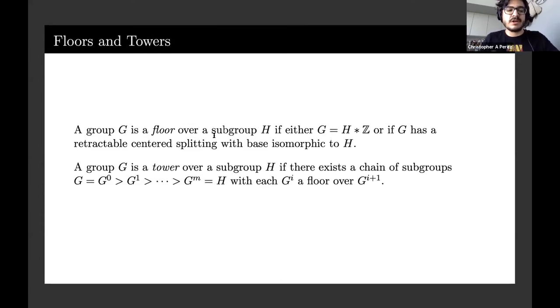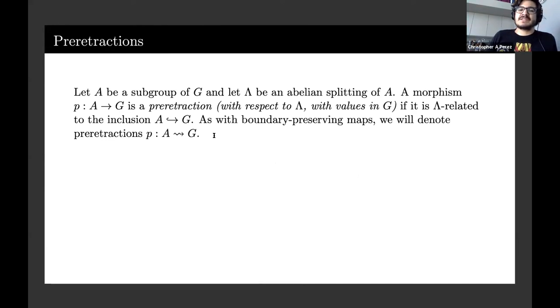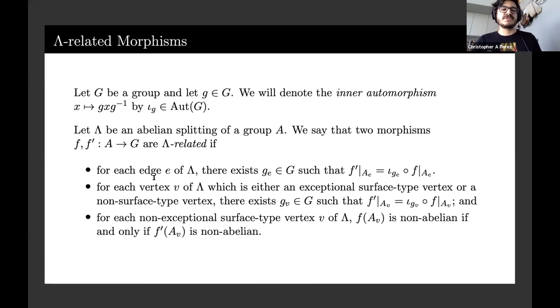These pre-retractions allow us to find the retractions we need to define the floor. I don't have so much time and I want to get to the first order logic stuff. Pre-retractions basically differ from the identity - they're a map that differs from the identity map by conjugating in a nice way on vertex and edge groups. We say that two morphisms from A to G are lambda related if they differ by an inner automorphism on all edge groups, if they differ by an inner automorphism on all non-surface type or exceptional surface type vertex groups, and if it acts as a boundary preserving map on all the non-exceptional vertex groups.